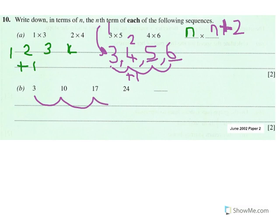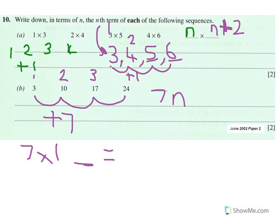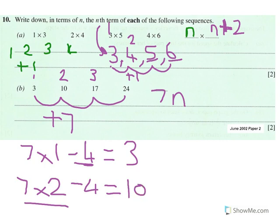In part b, you can see this sequence goes up in sevens. That must mean it's seven n. If I do one times seven, I don't get three; two times seven, I don't get ten; three times seven, I don't get seventeen. Seven times one is seven — I'm going to have to take away four. Check the second term: seven times two is fourteen, take away four is ten. So the rule is seven n minus four.